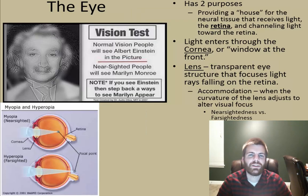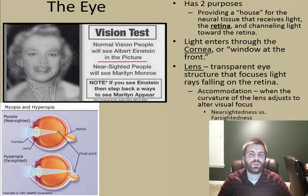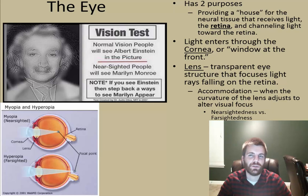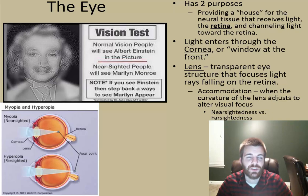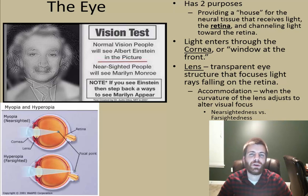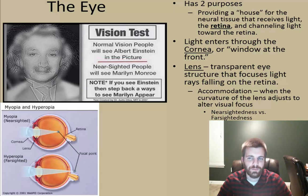The eye itself really has two main purposes. One is to provide a house for the neural tissue that receives light, known as the retina, and it also channels light onto the retina. The place where light first enters the eye is nicknamed the window at the front of the eye — this is called the cornea. The part of the eye that focuses that light is called the lens, the transparent eye structure that focuses light rays onto the retina.